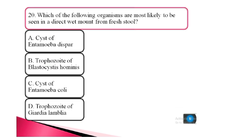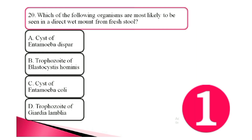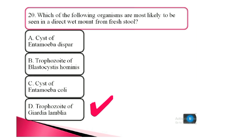Question 20. Which of the following organisms are most likely to be seen in a direct wet mount from fresh stool? a. cyst of Entamoeba dispar, b. trophozoite stage of Blastocystis hominis, c. cyst of Entamoeba coli, d. trophozoite stage of Giardia lamblia. The answer is d. trophozoite stage of Giardia lamblia.